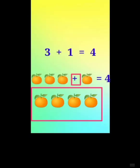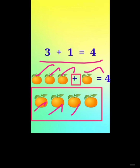3 plus 1 is equal to 4. First, how many oranges are given here? 1, 2, 3. Plus adding one more orange. Totally how many oranges? 1, 2, 3, 4. By adding 1, totally we have 4 oranges. The answer is 4. 3 plus 1 is equal to 4.